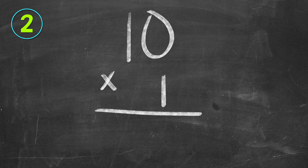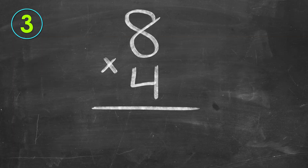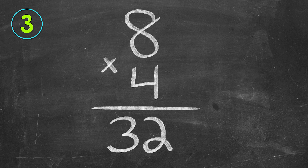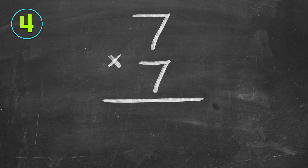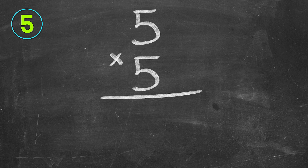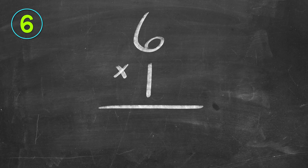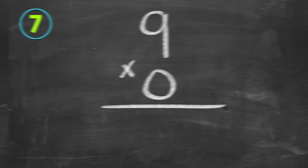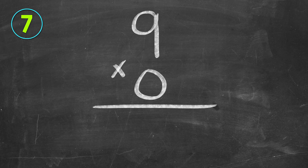10 times one. 10. Eight times four. 32. Seven times seven. 49. Five times five. 25. Six times one. Six. Nine times zero. Zero.